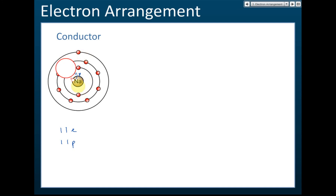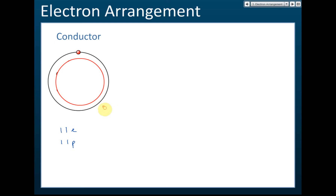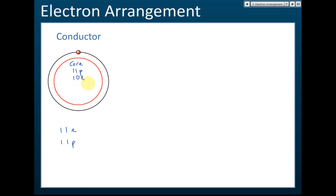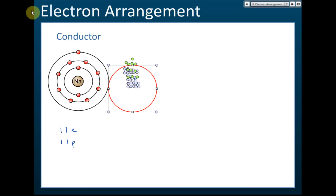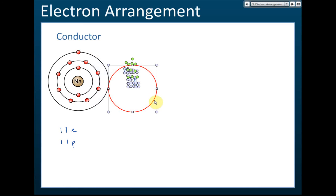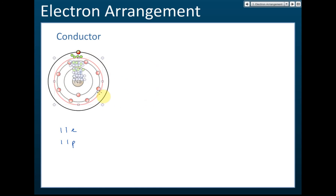The region inside the valence electron shell is called the core. Inside this core, there are 11 protons in the nucleus and 10 electrons — one, two, three, four, five, six, seven, eight, nine, ten. So the core has 10 electrons and 11 protons.